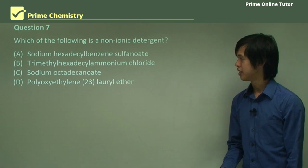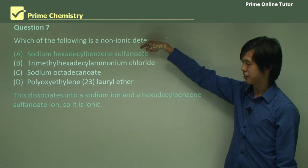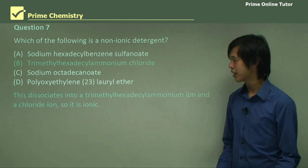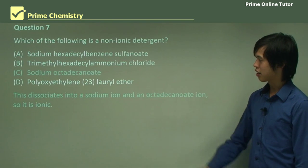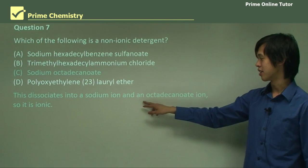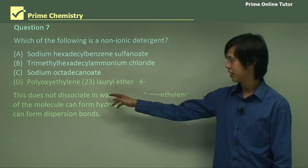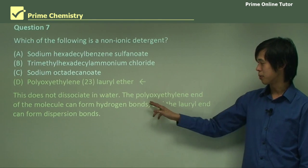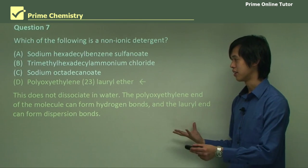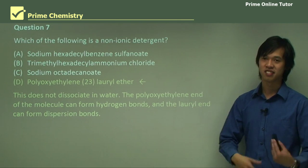Which of the following is a non-ionic detergent? Sodium hexadecylbenzene sulfonate is probably anionic because of the sulfonate group — so it's ionic. Trimethylhexadecyl ammonium chloride — the ammonium chloride instantly tells you it's cationic, so again ionic. Sodium octadecanoate — because of the sodium dissociating away, you get a negative charge at the end, an octadecanoate ion, so again it's ionic. The answer must be polyoxyethylene lauryl ether — this does not dissociate with water; the polyoxyethylene end forms hydrogen bonds and the lauryl end forms dispersion forces. So this is a non-ionic detergent.